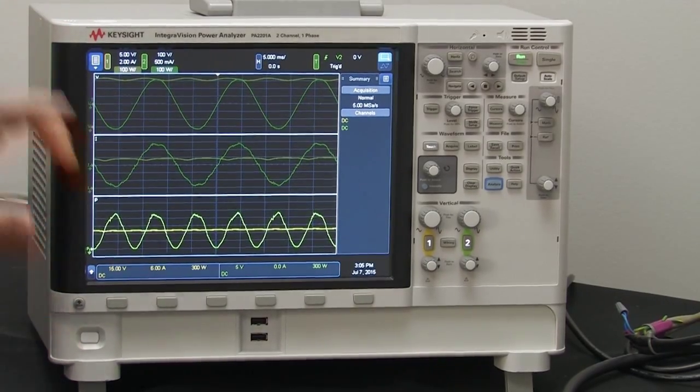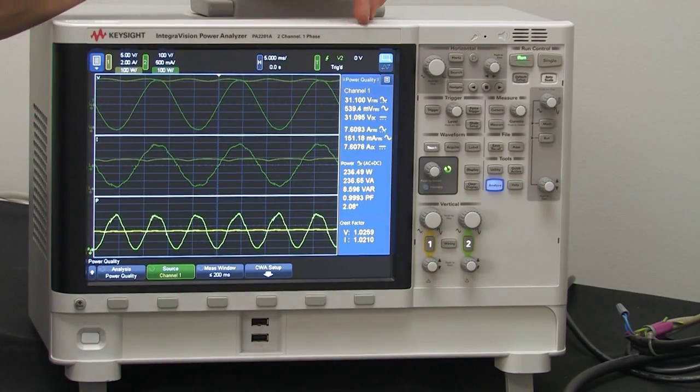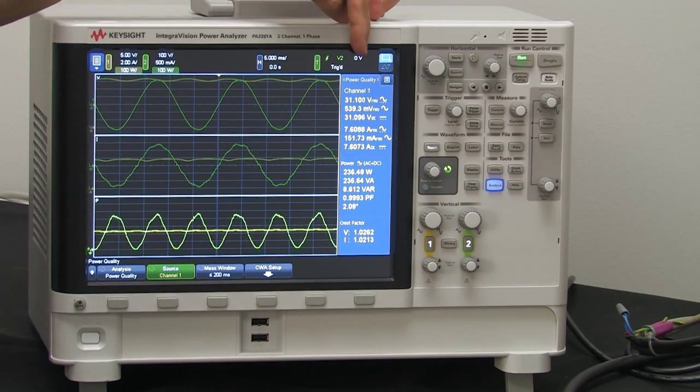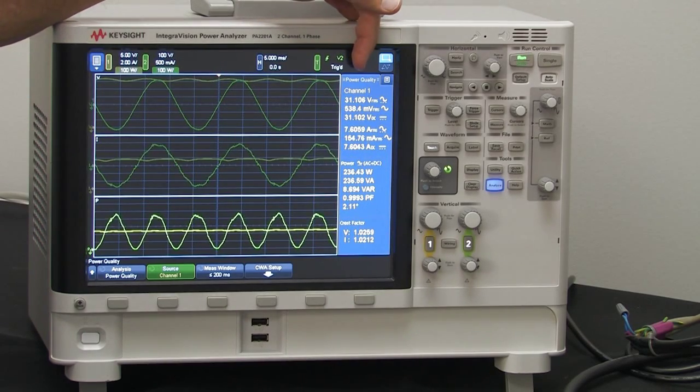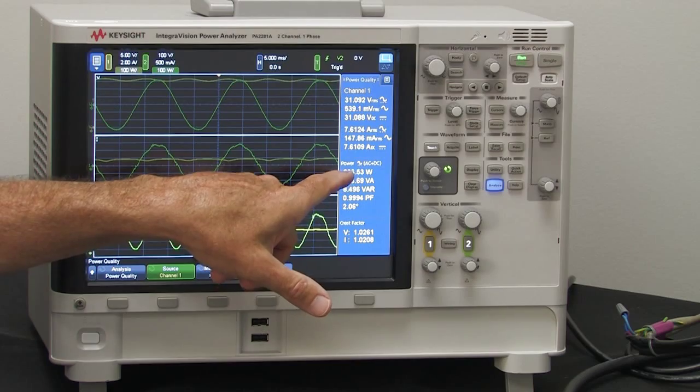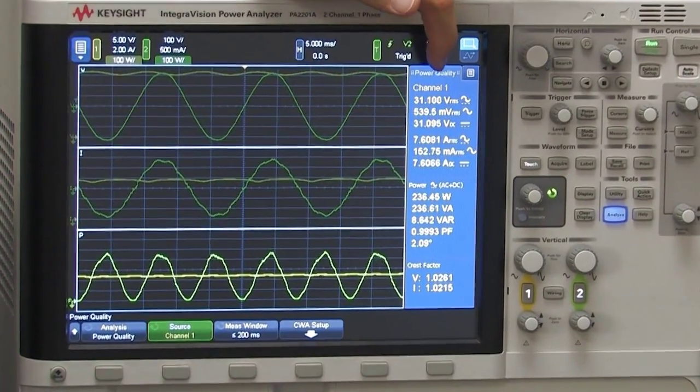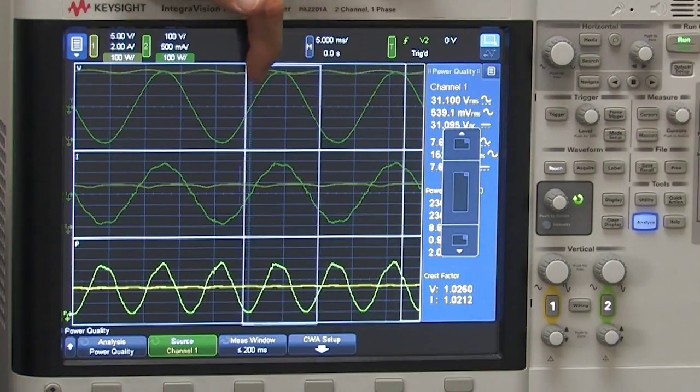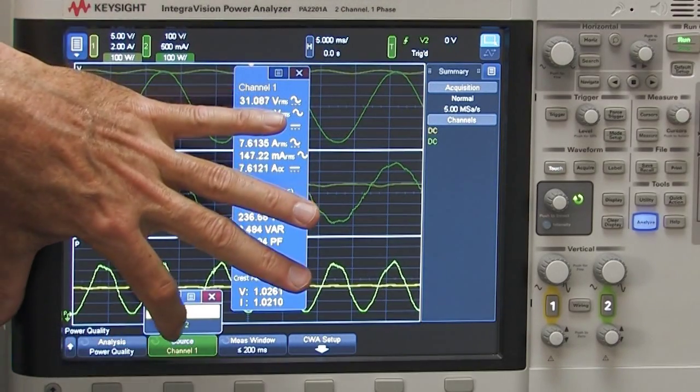So if we want to, we can take a quick look at this power quality panel, which shows for channel one the input voltage is roughly 31 volts, and the input power on here is about 236 watts. This is a touch screen, so it's very easy to move these things around. I can also look at the power for channel two.